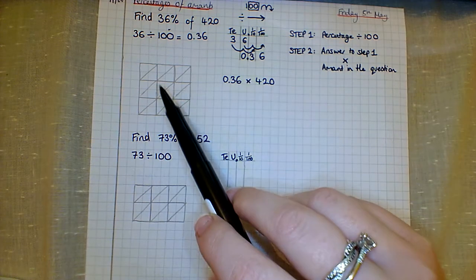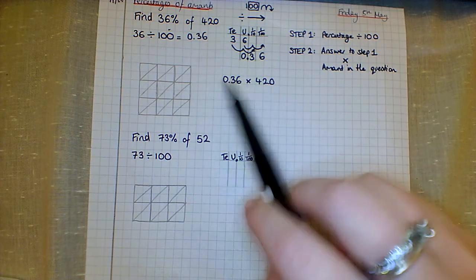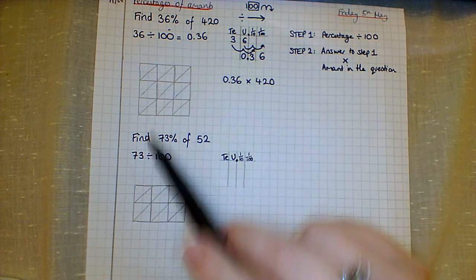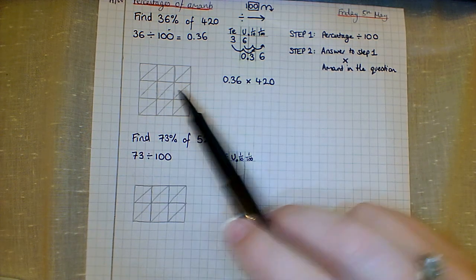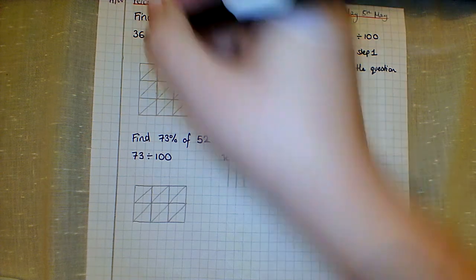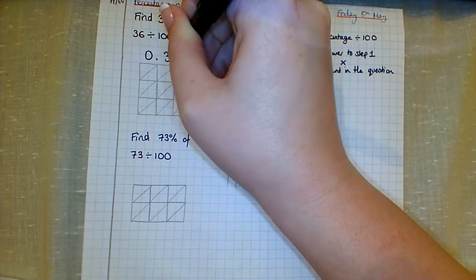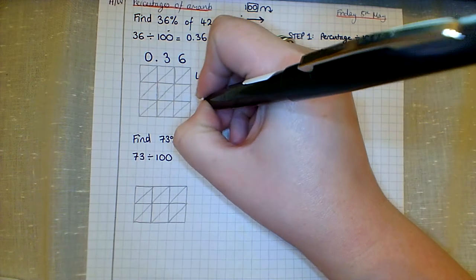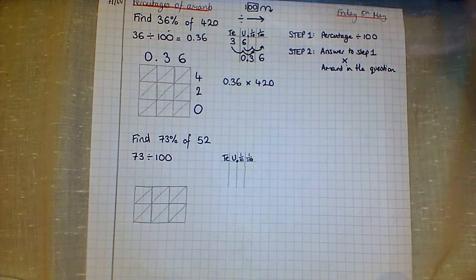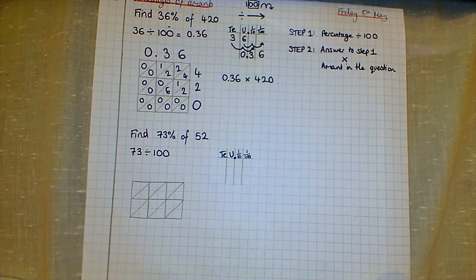To times any numbers we're going to use the Chinese method. If I'm doing a decimal times a whole number and I put the decimal on top, the point is literally just going to drop straight down that line. We don't even have to worry about figuring out where it was, so always choose to put your decimal on top. I'm going to put 0.36 on the top and 420 on the side. You guys know how to fill this in already, so I'm going to do this really quickly.